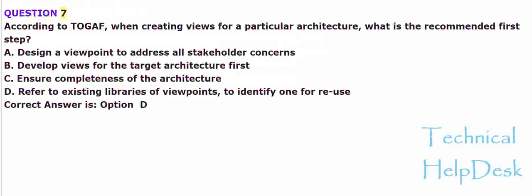Question 7. According to TOGAF, when creating views for a particular architecture, what is the recommended first step? A. Design a viewpoint to address all stakeholder concerns. B. Develop views for the target architecture first. C. Ensure completeness of the architecture. D. Refer to existing libraries of viewpoints to identify one for reuse. Correct answer is Option D.